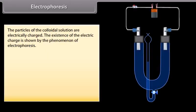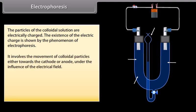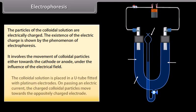The particles of a colloidal solution are electrically charged; the existence of this electric charge is shown by the phenomenon of electrophoresis, which involves movement of colloidal particles either towards the cathode or anode under the influence of an electrical field. In a U-tube fitted with platinum electrodes, on passing electric current the charged colloidal particles move towards the oppositely charged electrode.